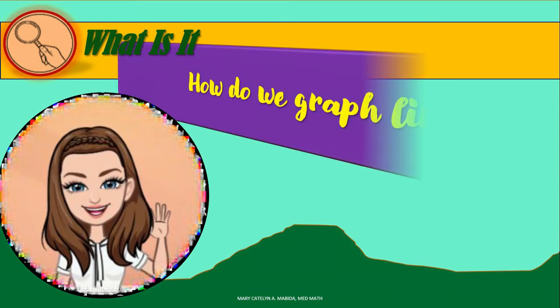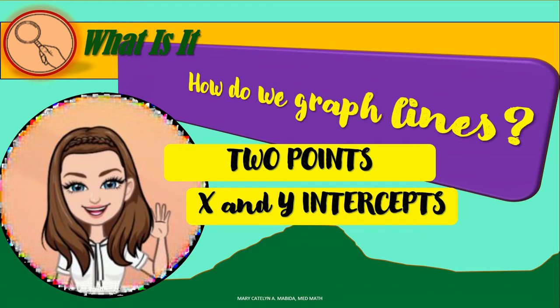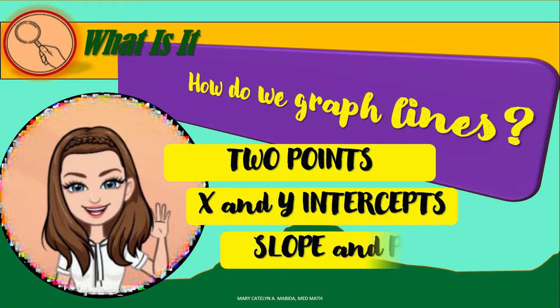How do we graph lines? We graph lines using two points, x and y-intercepts, and the slope and a point on a line. A linear equation can be written in the form y = mx + b, or Ax + By = C.